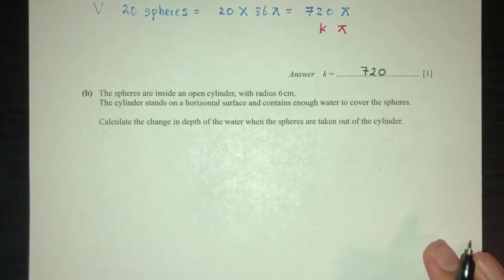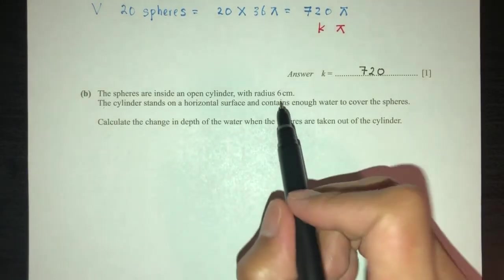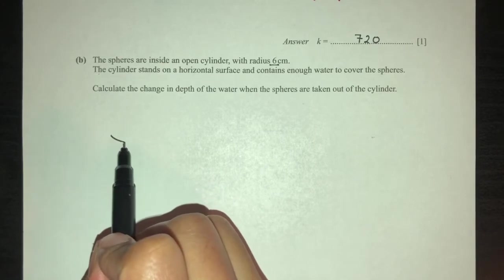Now, for part B, the spheres are inside of an open cylinder with radius 6. So, right now, we have a cylinder. First, let's draw the cylinder.